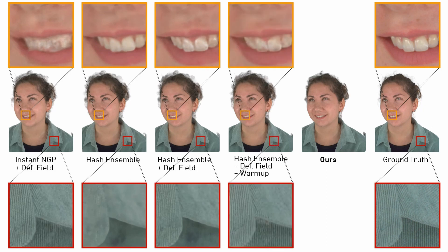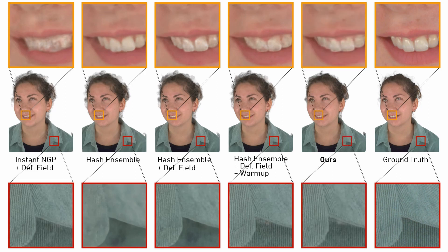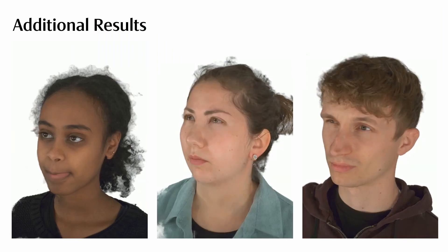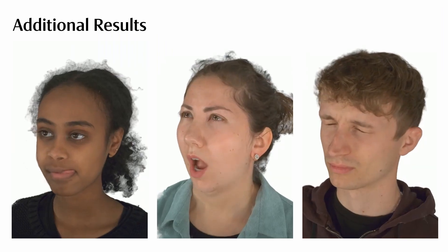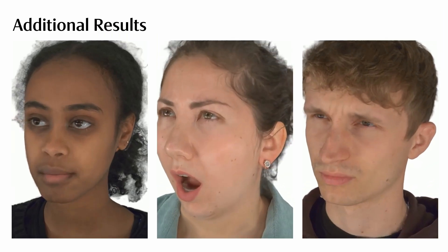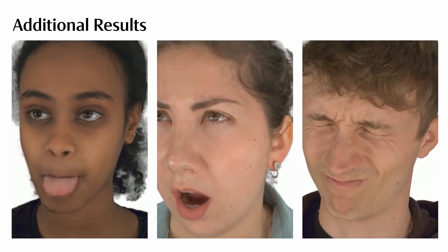By employing a warm-up phase for the deformation field, sharp detail can be reconstructed using 16 hash tables, which can be further improved by increasing the number of hash tables. Finally, we show more detailed zoom-ins to showcase the reconstruction quality of our method.